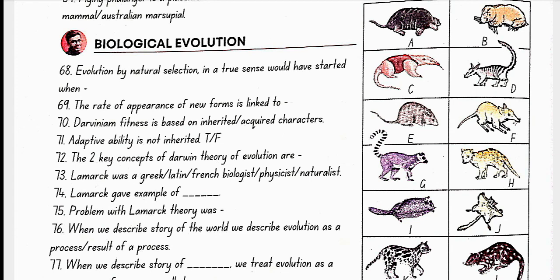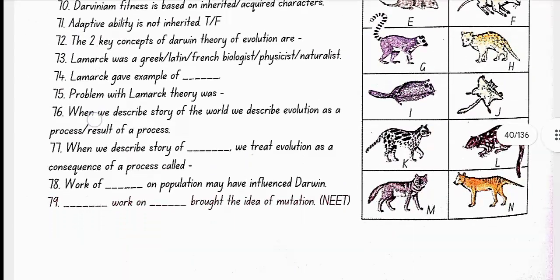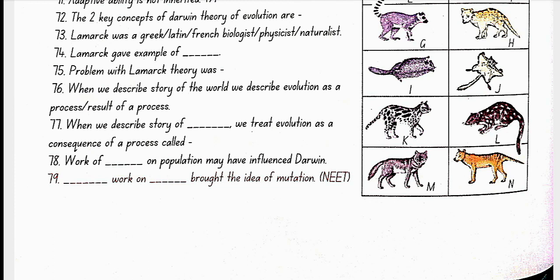The two key concepts of Darwinian theory of evolution are branching descent and natural selection. Lamarck was a French naturalist. Lamarck gave example of giraffes. Problem with Lamarck theory was it said that acquired characters are passed to the next generation which is wrong. When we describe the story of the world, we describe evolution as a process. When we describe the story of life on earth, we treat evolution as a consequence of a process called natural selection.